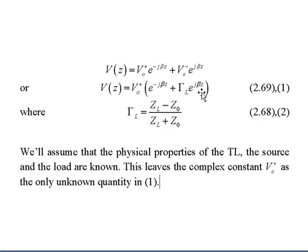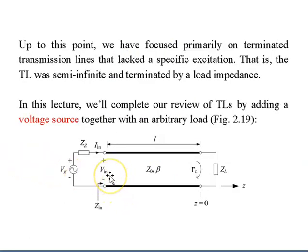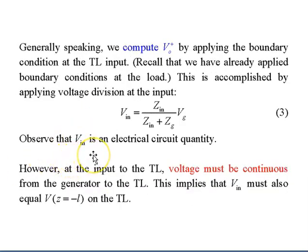We are going to assume that the physical properties of the transmission line, the source, and the load are given. So now it only comes down to V_0+, which is an unknown quantity. Generally speaking, we compute V_0+ by applying the boundary condition at the transmission line input. We apply voltage division: V_in equals Z_in over (Z_in plus Z_g) times V_G. Observe that V_in is an electrical circuit quantity.